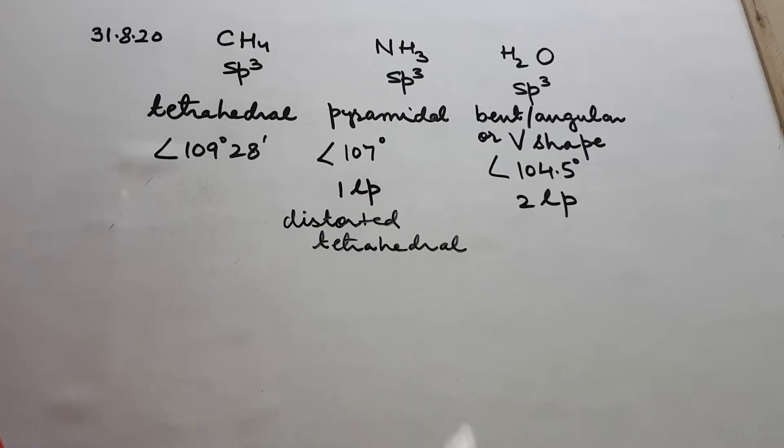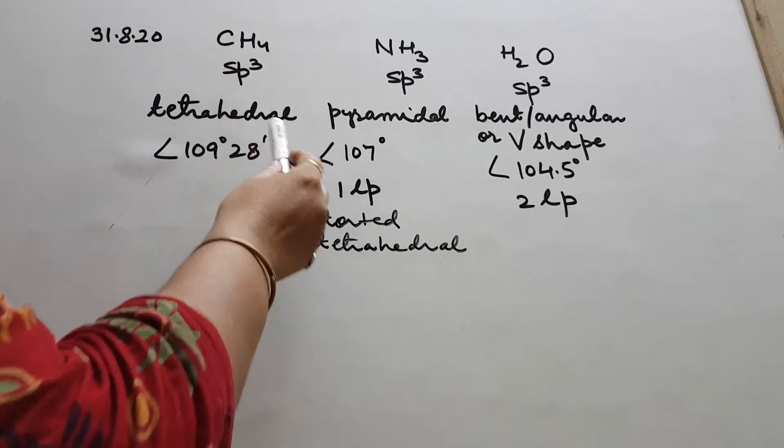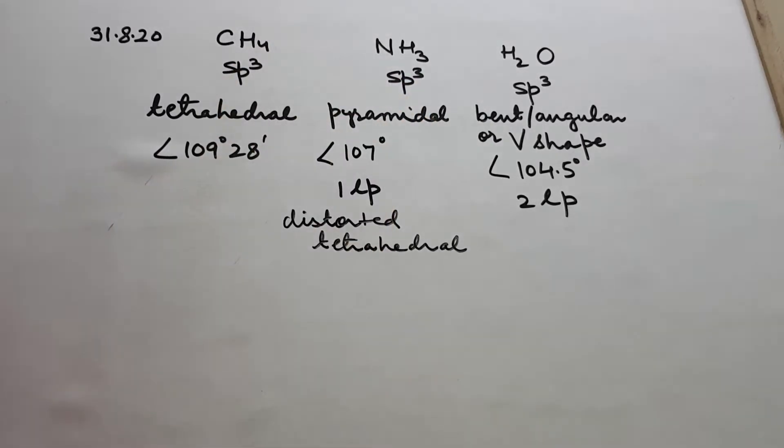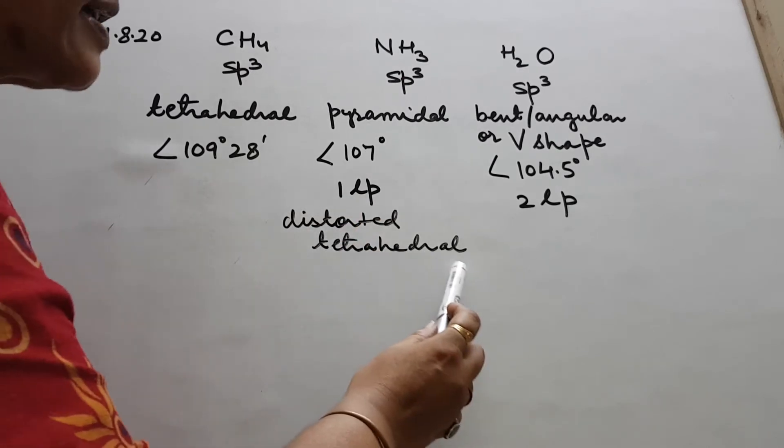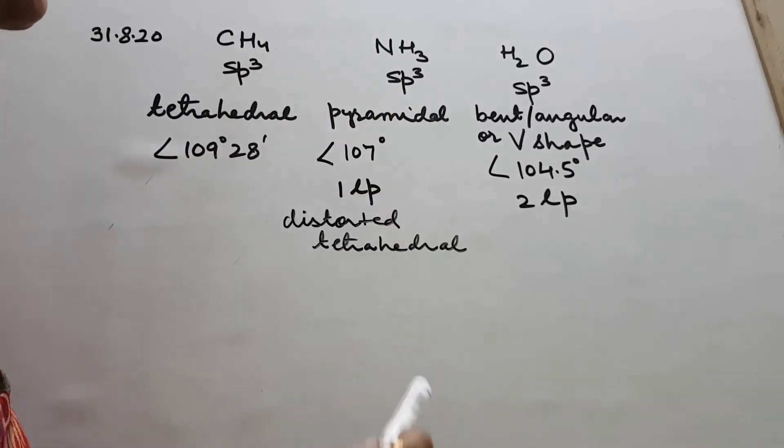You will find they all get sp3 hybridization. The shape is tetrahedral for methane, but in case of ammonia, because of one lone pair, it gets distorted tetrahedral which is precisely called pyramidal shape. You have to remember both terms.